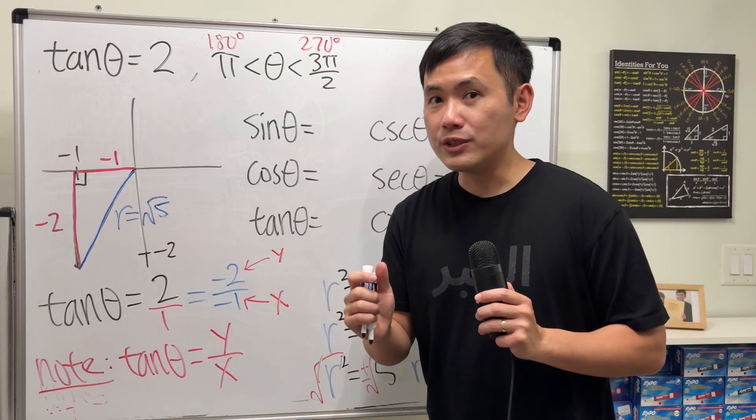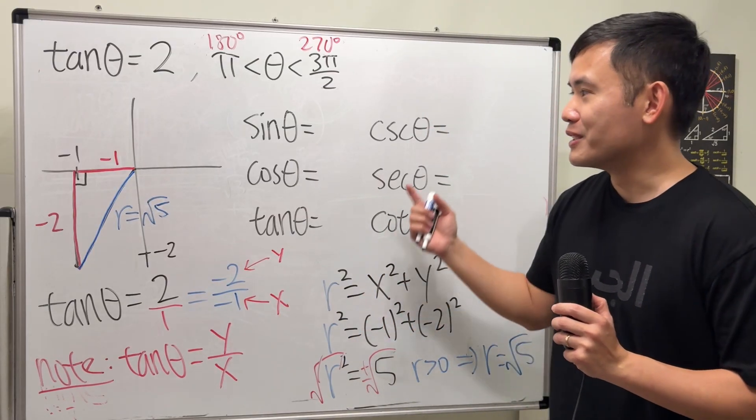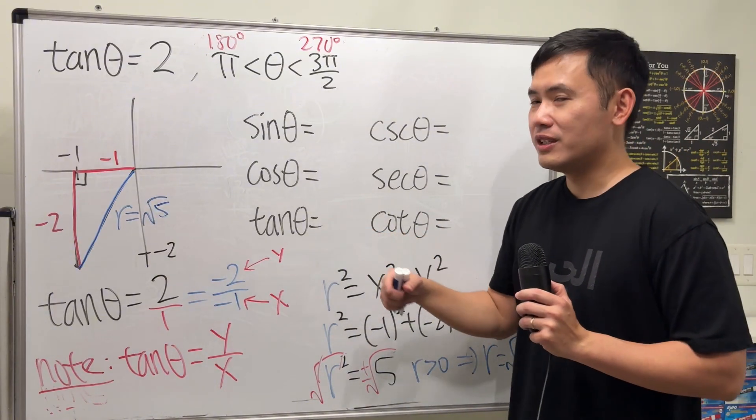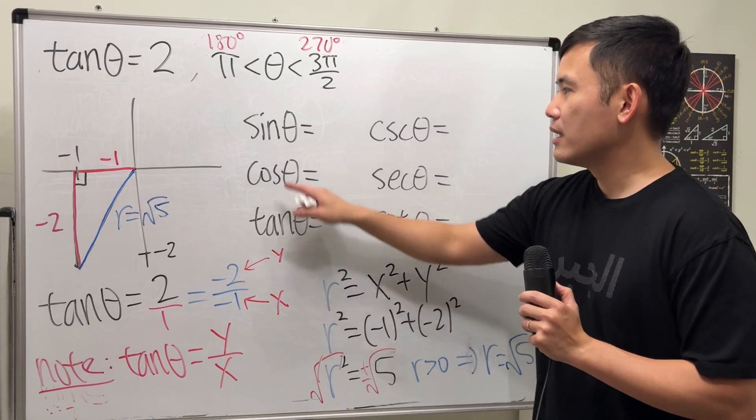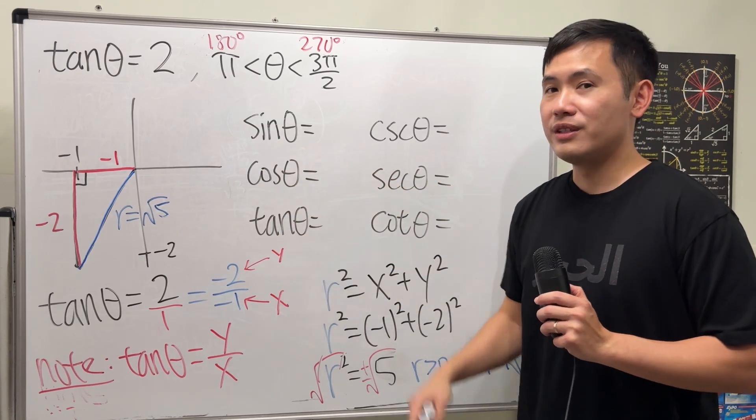Now we have this reference triangle that helps us get the answers. And the reason I put on tangent is because this is a nice order that I like to have. We have sine, cosine, tangent. Sine divided by cosine is equal to tangent.